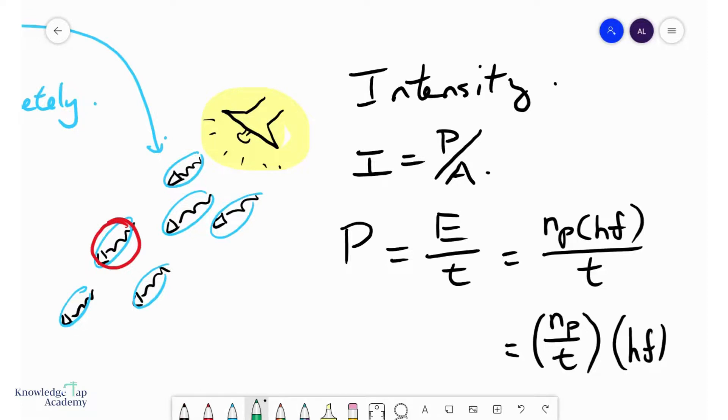And so what we should take away from this is that if I increase the power or, for that matter, increase the intensity of a source, you do not change HF. What you're actually doing is you're increasing the rate at which you emit photons.